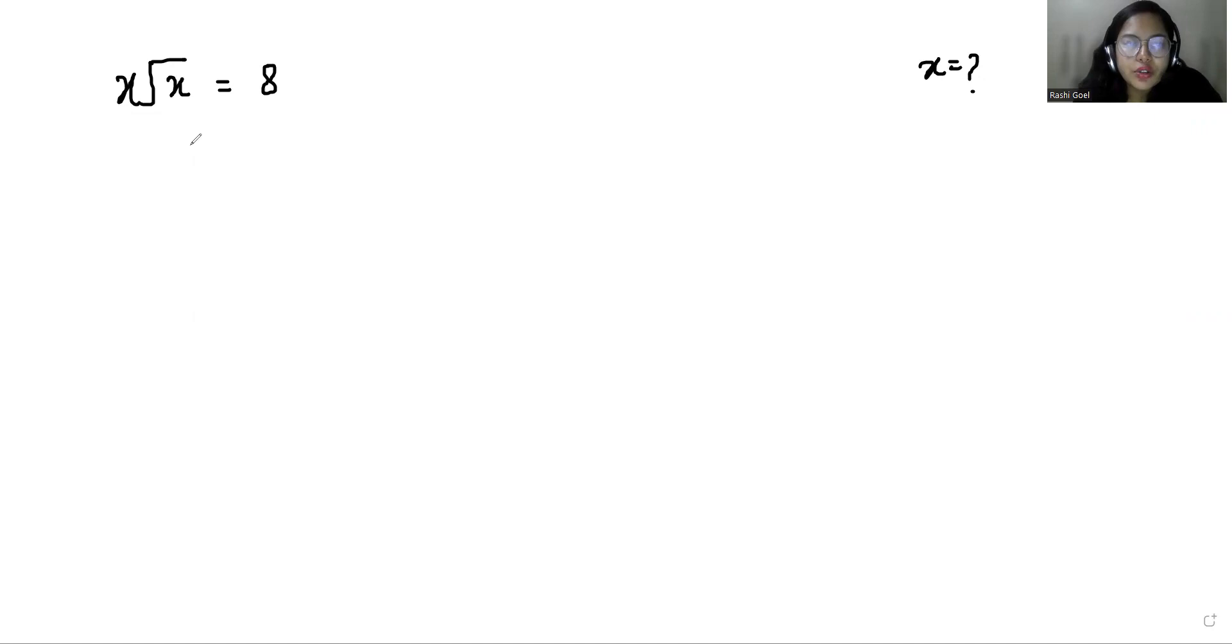So let's start with today's video solution. I'm doing squaring both sides. So x squared times square root of x squared equals 8 squared.